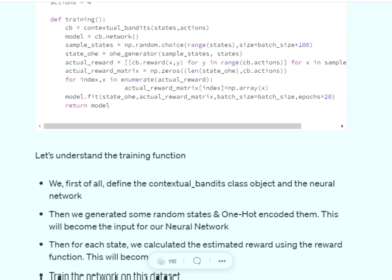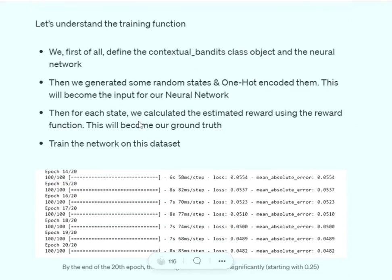And eventually, we are using the model to fit over these values. What we are doing is we are feeding in the state one-hot vectors, and then the actual reward matrix becomes our output, and we are training the model over that.